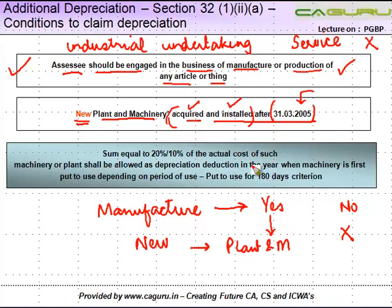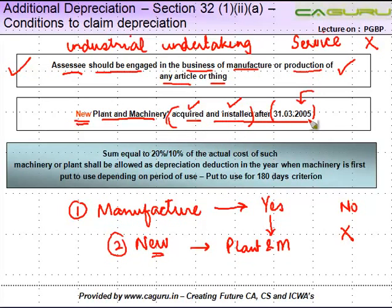Both acquisition as well as installation have to be after 31st March 2005. Once you satisfy both conditions — condition one: you are an SSE engaged in manufacture; condition two: you install new plant and machinery which is acquired and installed after 31st March 2005 — a sum equal to 20% or 10% of the actual cost shall be allowed as additional depreciation.